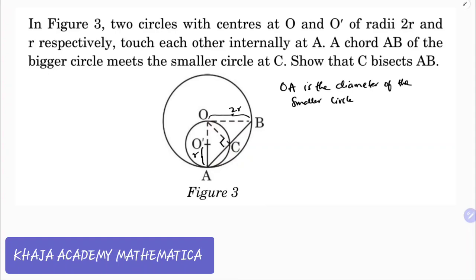angle in a semicircle is 90. Angle OCA is 90 degrees because angle in a semicircle is 90. So as this angle in a semicircle is 90, if you see the big circle,